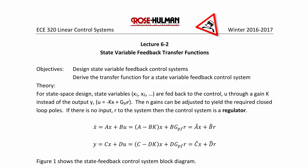For state space design, we have state variables x1, x2, and so on fed back to the control u through a gain k instead of the output y. u is equal to negative kx plus gpf r. We did some examples of this in the last lecture.